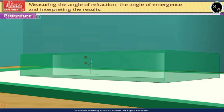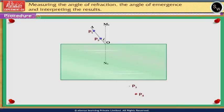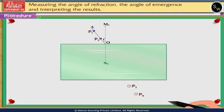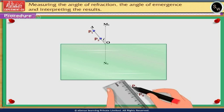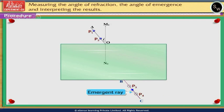Observe the images of the bases of pins P1 and P2 through the glass slab from the opposite side, and fix two pins P3 and P4 such that the bases of these pins are exactly in line with the images of the bases of pins P1 and P2. Remove the pins P3 and P4 and mark their positions by drawing small circles.